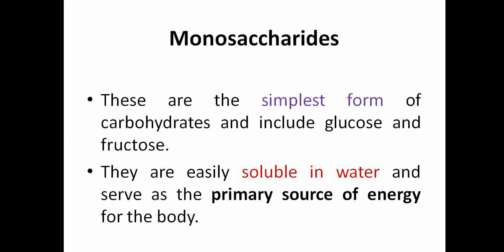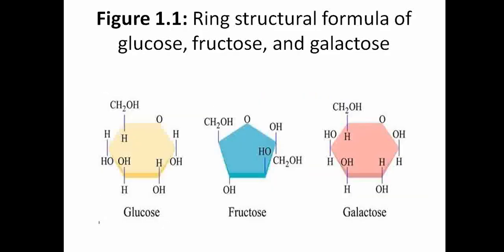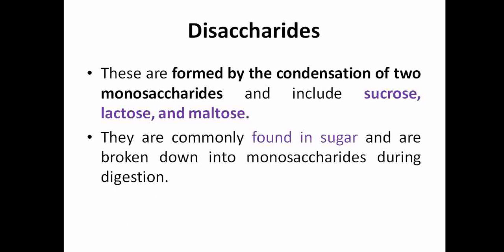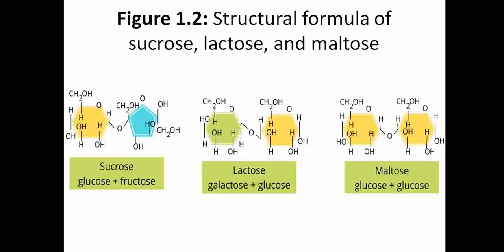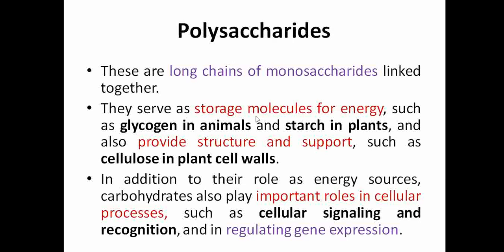Monosaccharides are the simplest form — only one saccharide unit. They are soluble in water and act as a primary source of energy. Examples include glucose, fructose, and galactose. Disaccharides are formed by combining two monosaccharides — for example, sucrose, lactose, and maltose. They are mostly found in sugars, and when broken down they yield monosaccharides. For example, glucose and fructose combine to give sucrose.